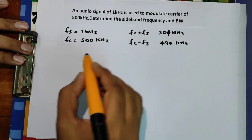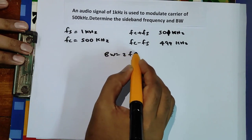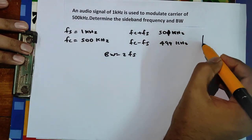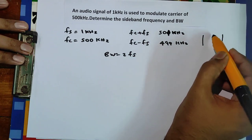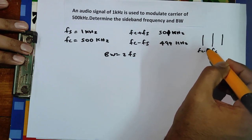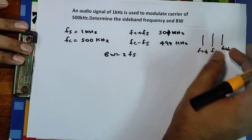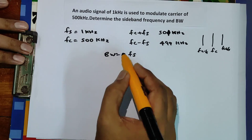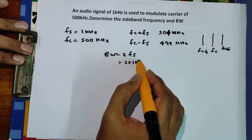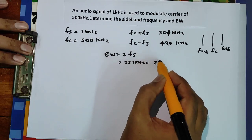What is the bandwidth? The bandwidth is equal to twice the frequency of the signal. We have the lower sideband at fc − fs, the carrier at fc, and the upper sideband at fc + fs. So bandwidth = 2 × 1 kHz = 2 kHz.